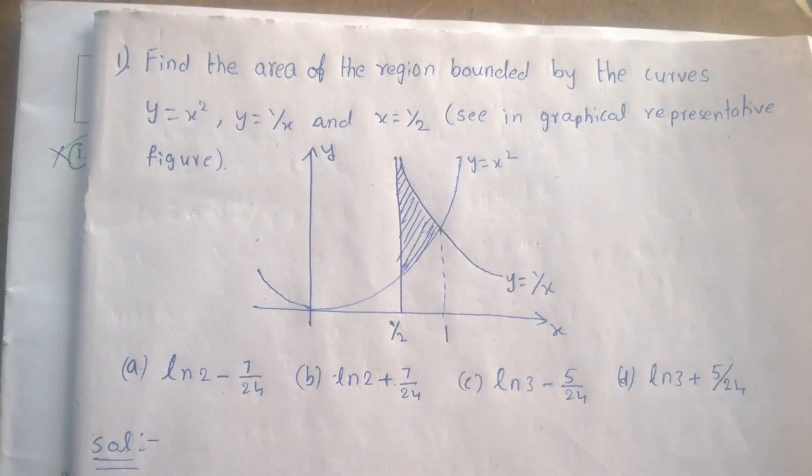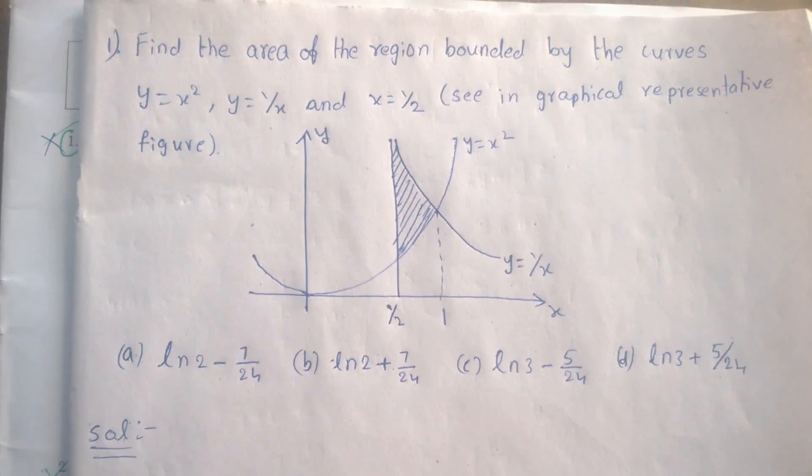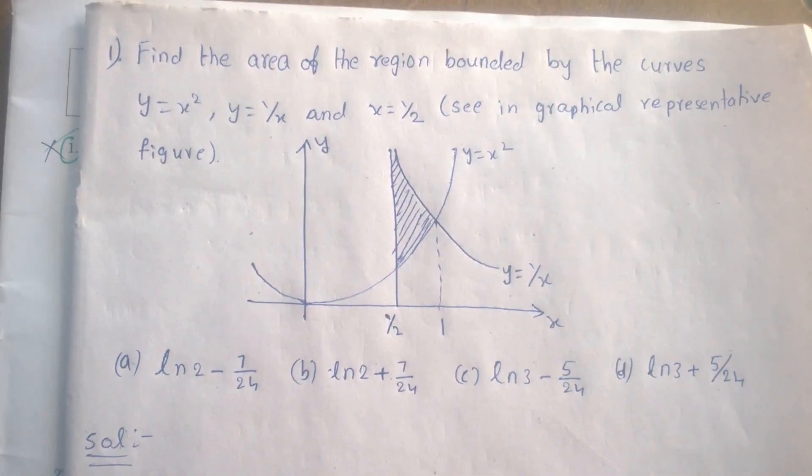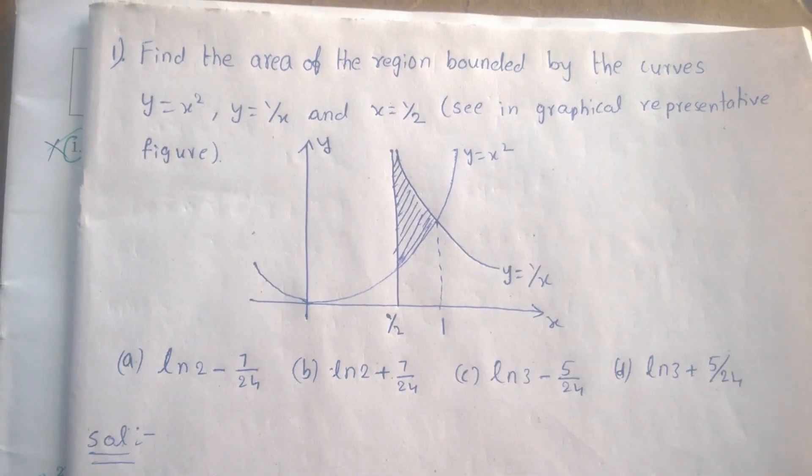This is the first question obtained in Istro 2017 set A. The question is: find the area of the region bounded by the curves y equals x square, y equals 1 by x, and x equals 1 by 2.